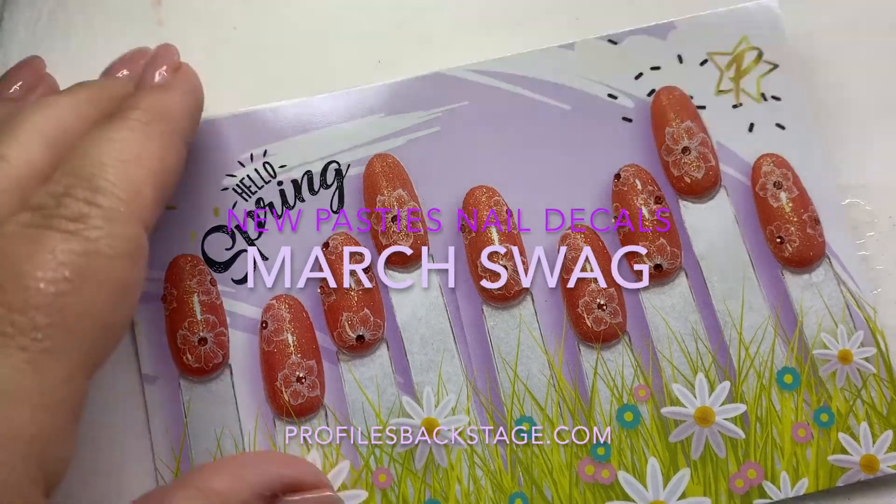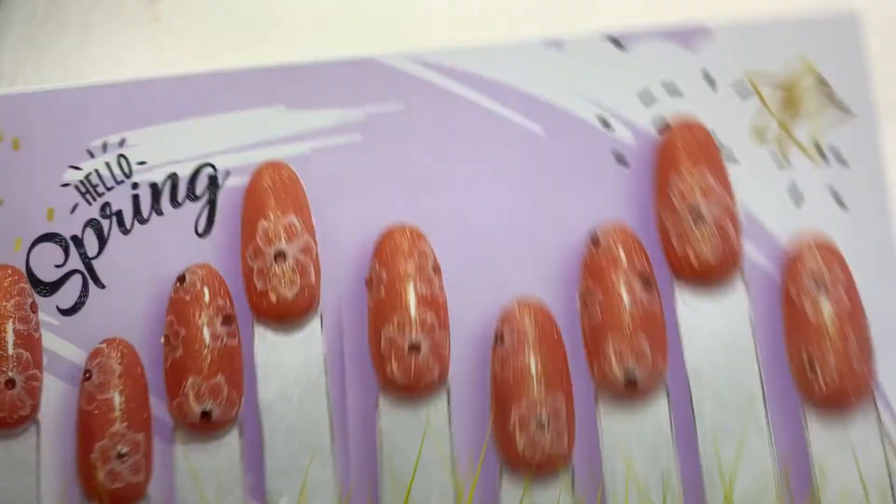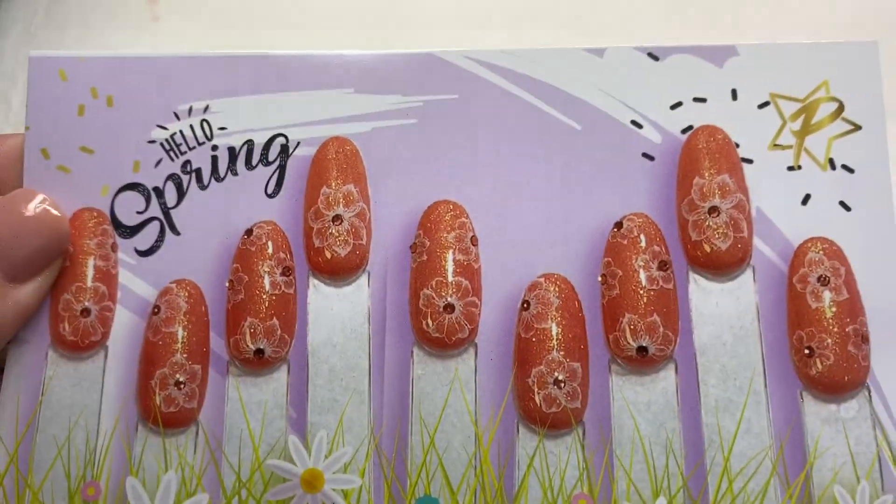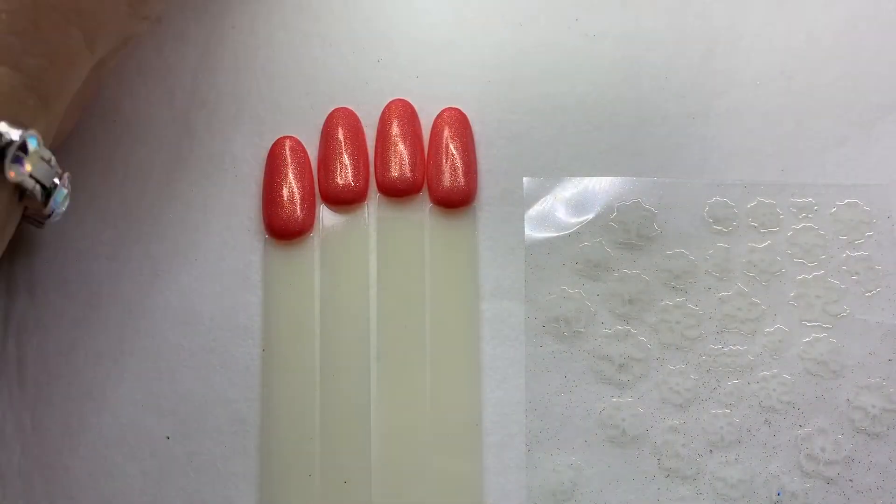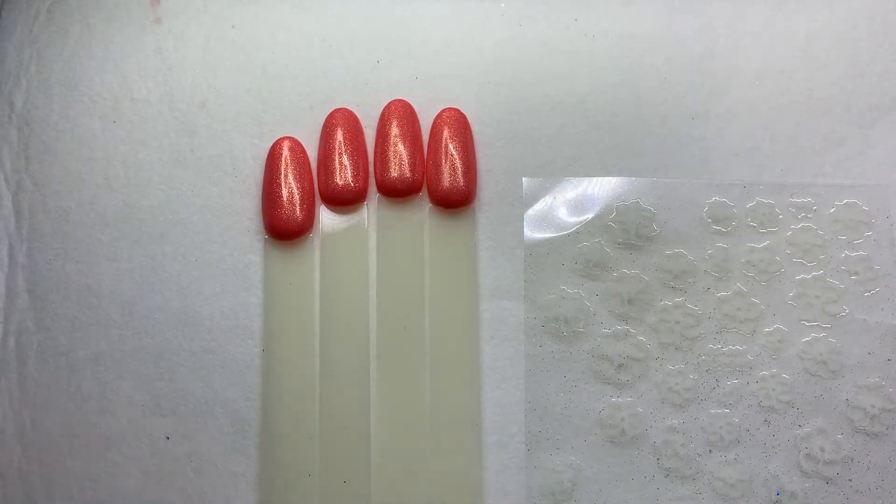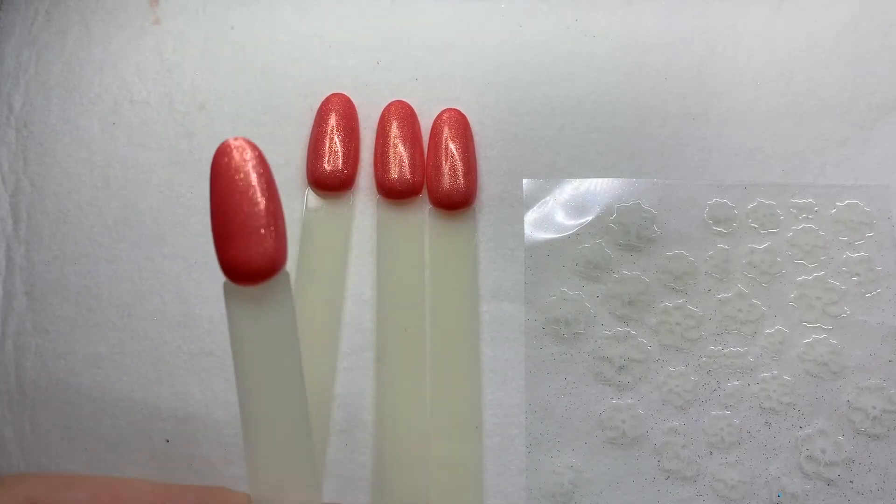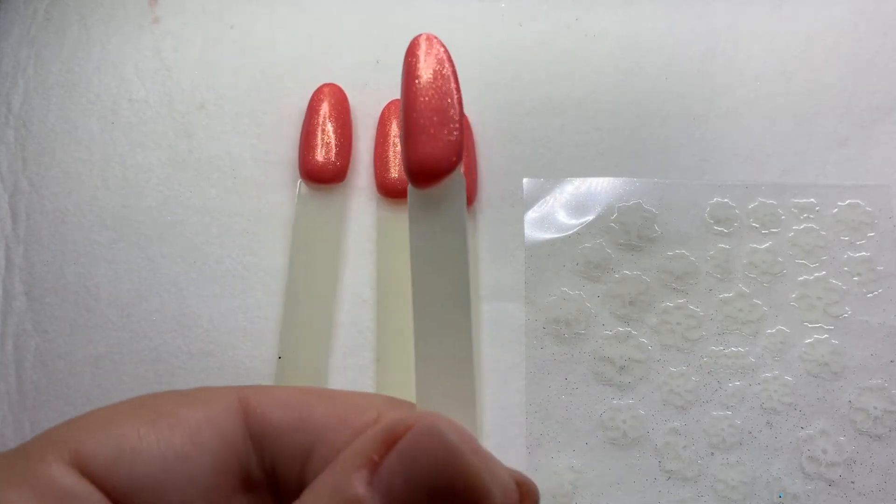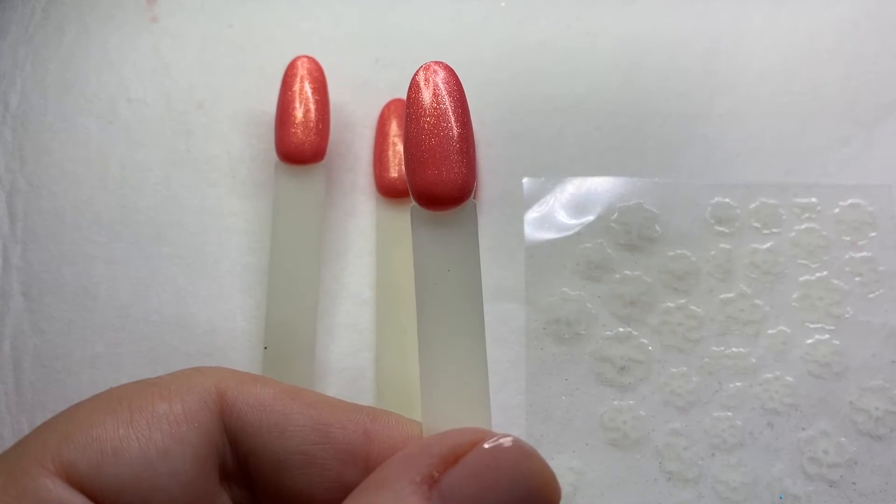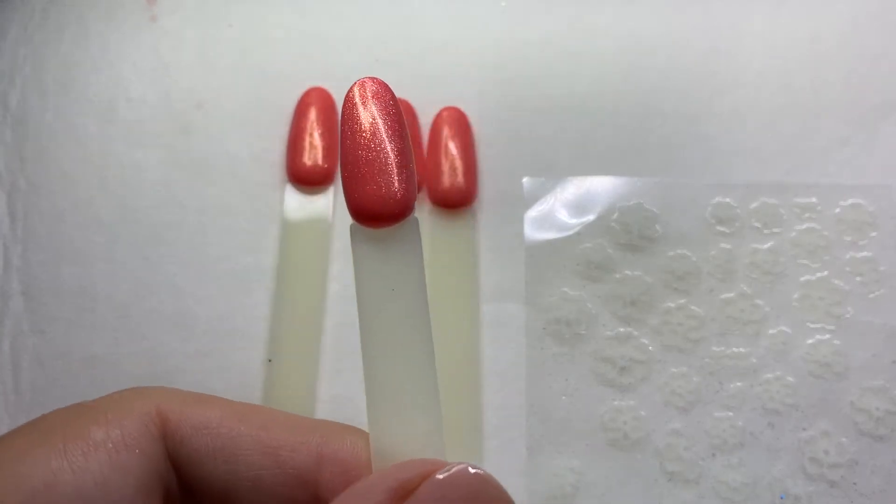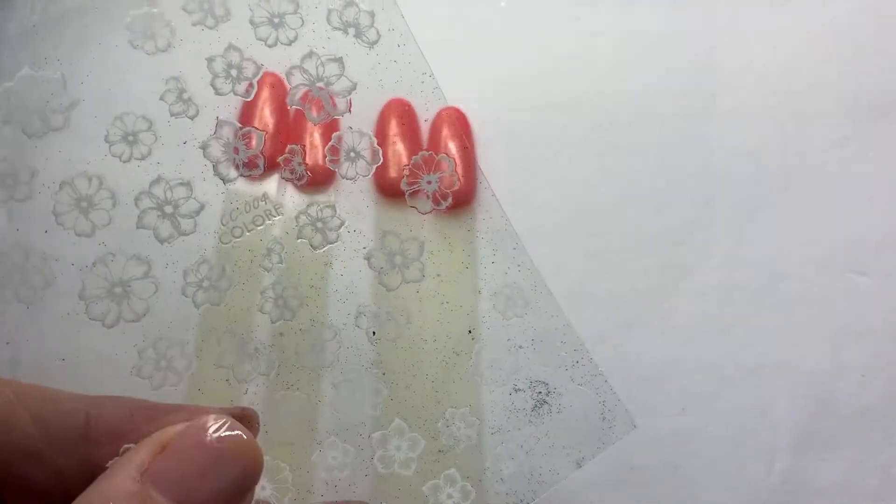Hi everyone, Amy here with your fabulous March swag. These are some great new pasty decals that we have a whole collection of. To get started with these nails, we did two coats of our new coral crush gel polish. It's got a little bit of a gold flake in there—it's beautiful.